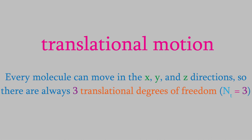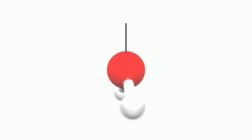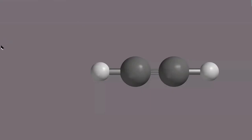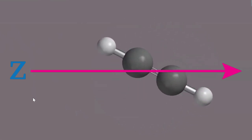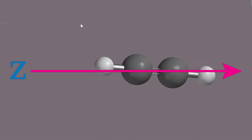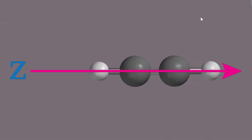What about rotational degrees of freedom? It might seem like every molecule would have three, because a molecule can rotate around the x, y, or z axes. Most molecules do indeed have three, but that's not true for all molecules. Consider an acetylene molecule — if the z-axis is oriented along the bond, rotation around the z-axis doesn't have any detectable effect because the molecule is symmetric around that axis. So for a linear molecule, there are just two rotational degrees of freedom, not three.